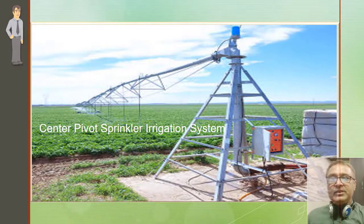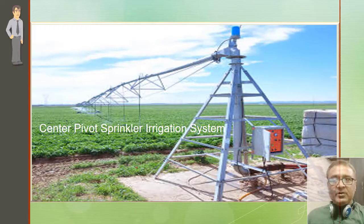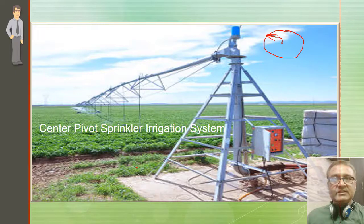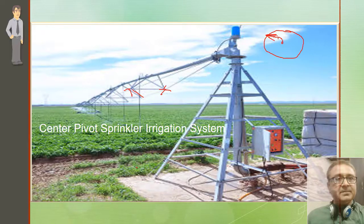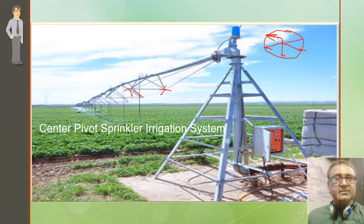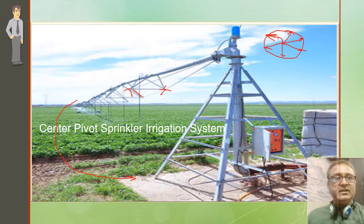Center pivot sprinkler irrigation system: इसमें जो sump है — water supply एक जगह पे है, वहाँ से radius of circle होता है। यह center point होता है और यहाँ से circular move करते हैं — जगह जगह पे hoses बने होते हैं वहाँ से spray होता है। यह center से clockwise या anticlockwise move करता है, जितनी इसकी length है उस radius में spray करते हुए पूरे farm में घूम देता है — it is at the center of the supply।